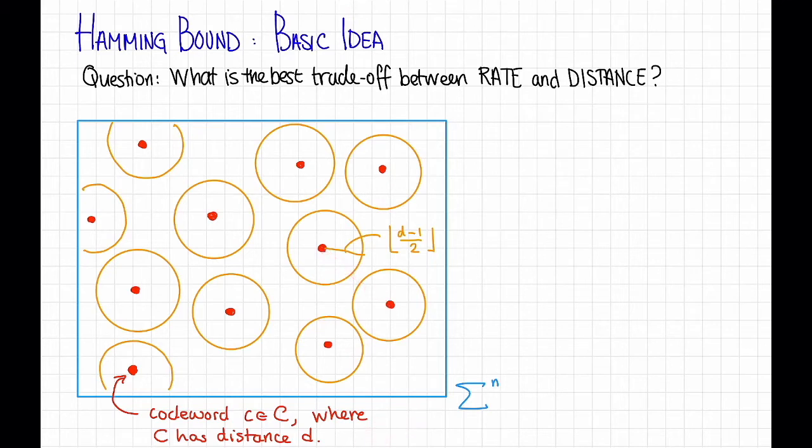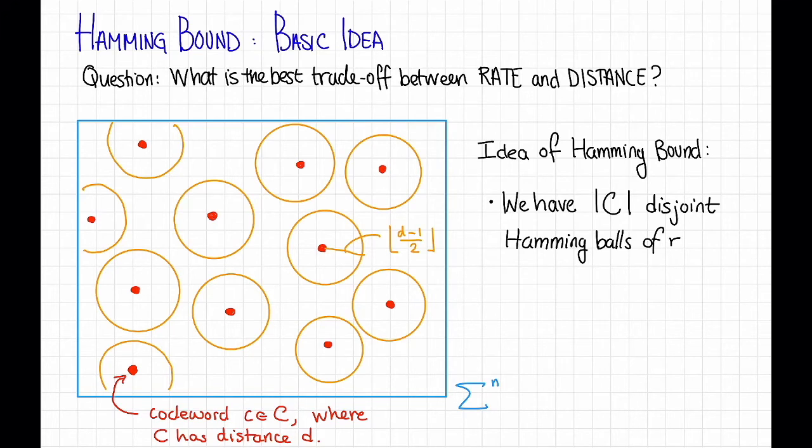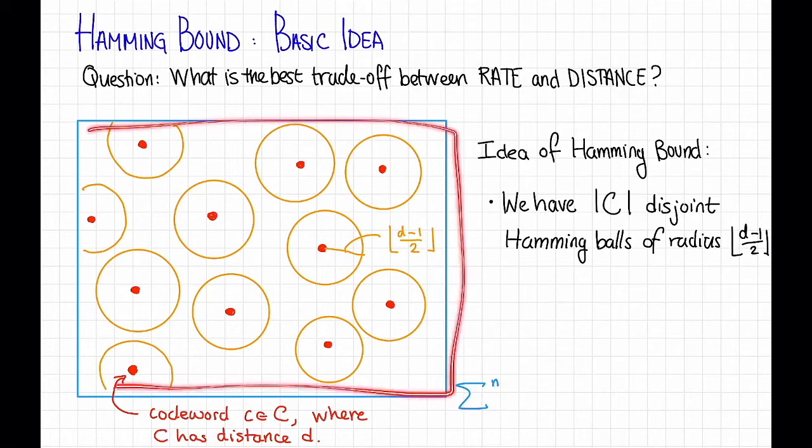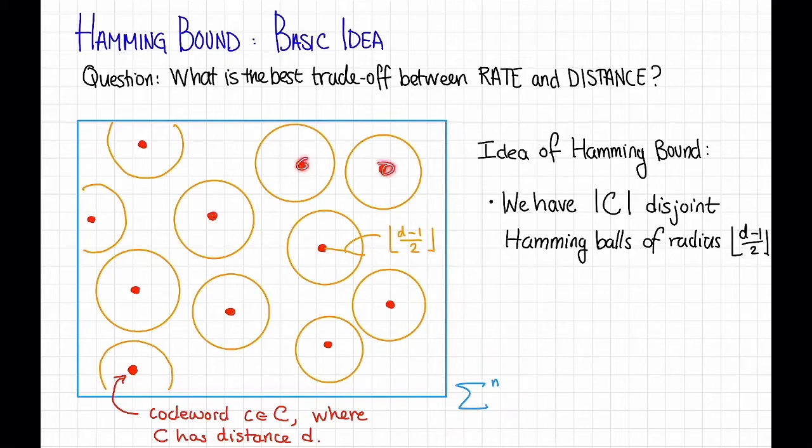So the idea of the Hamming bound is the following. We have here size of c disjoint Hamming balls of radius d minus 1 over 2 but somehow they all have to fit in this space sigma to the n. So we can't have too many of these Hamming balls or else they wouldn't all fit. Therefore we can't have too many code words. Therefore the rate of the code can't be too big.